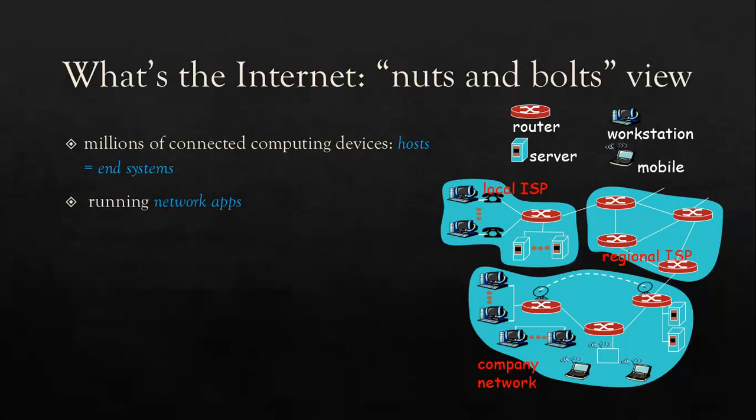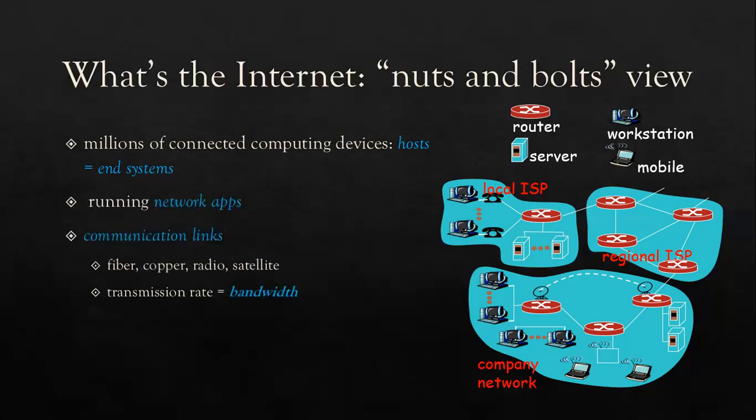When you are running a network app, you can run it with a communication link. Communication links are there — links have fiber, copper, radio, and satellite connected to multiple devices.